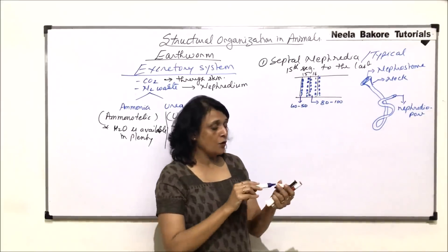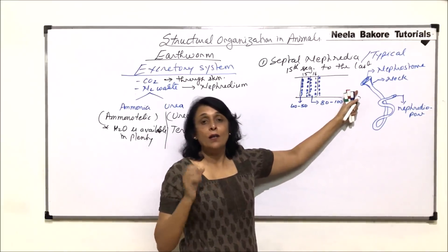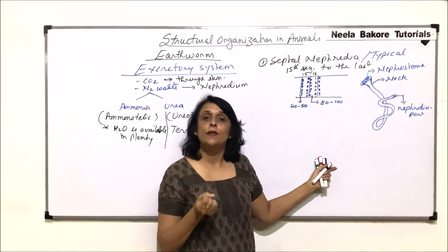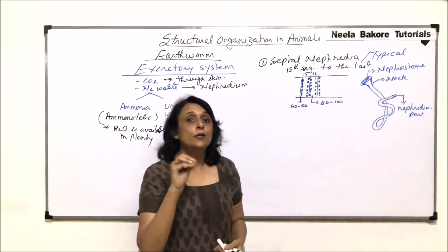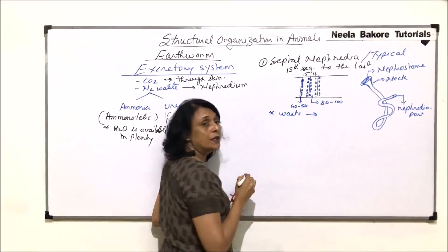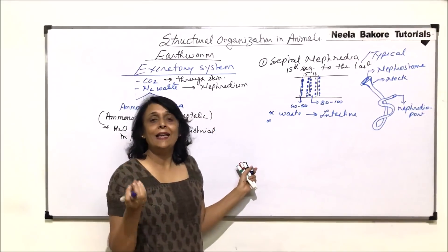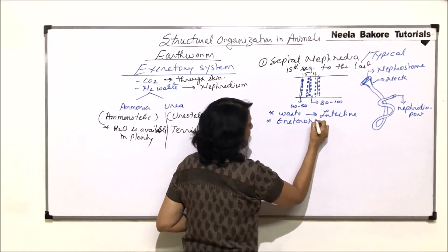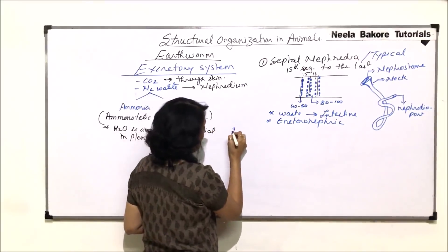The nephrostome is in the body cavity and collects waste material from the coelomic fluid. As waste passes through the tube, useful things are absorbed and unwanted things remain and are expelled through the pore. In the case of septal nephridia, the waste is dumped into the intestine — they are enteronephric, meaning waste goes into an internal structure.